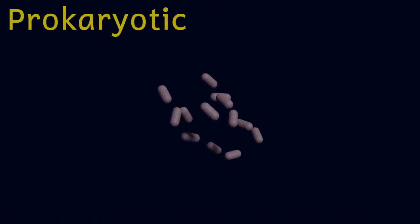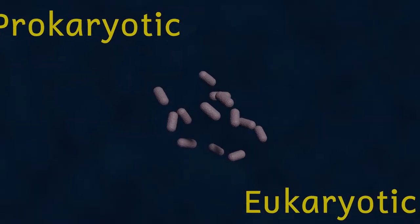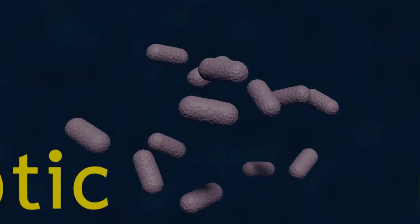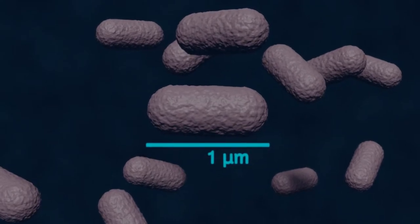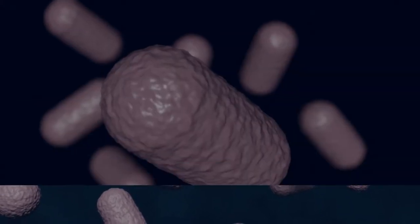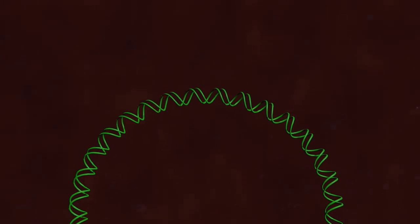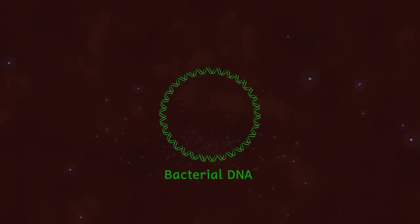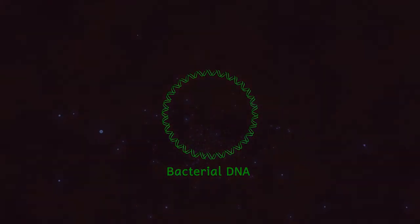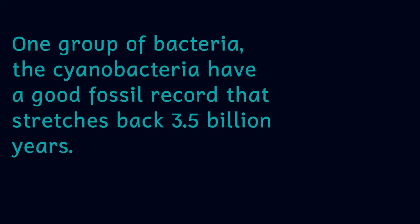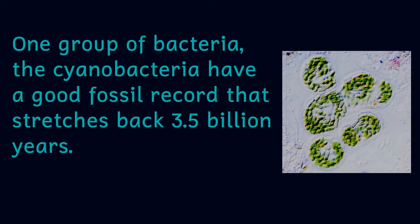First of all, we need to think about different types of cells. There are two broad groups of cells on Earth. These are called prokaryotic and eukaryotic cells. Prokaryotic cells are all bacteria. These cells are about one micrometer in diameter — that's about a thousandth of a millimeter. On the inside of these cells they have DNA, but instead of being in the form of chromosomes in a nucleus, the DNA in prokaryotic cells is in the form of a simple ring in the cell's internal fluid, which is called the cell cytoplasm. These cells are actually quite simple in their structure. Simple, however, doesn't mean worse or bad in any way. Bacteria are phenomenally successful and have been around for billions of years.